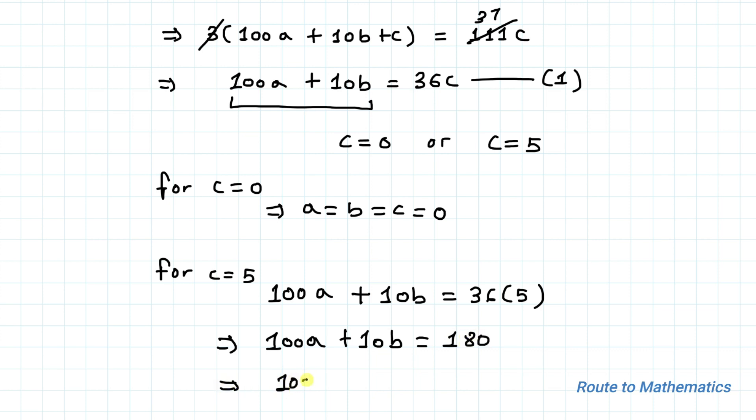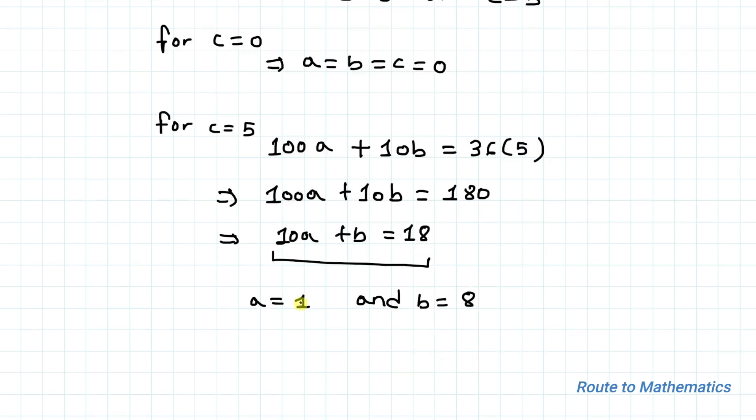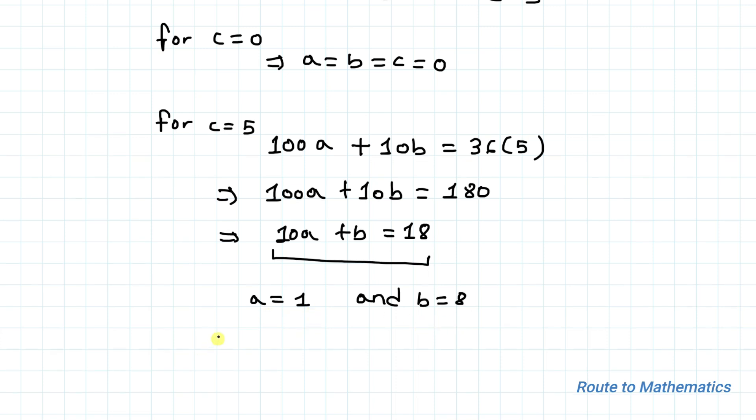we have 10A plus B equals 18. From the above equation, we can find that the value of A must be 1 and the value of B equals 8. If we put the value of A here, 1 times 10 is 10 plus 8 equals 18. So the possible values of A and B must be 1 and 8, and we found the 3-digit number ABC equals 185.